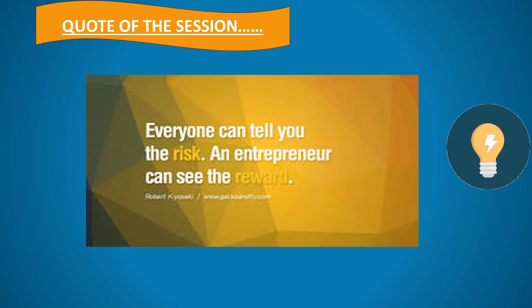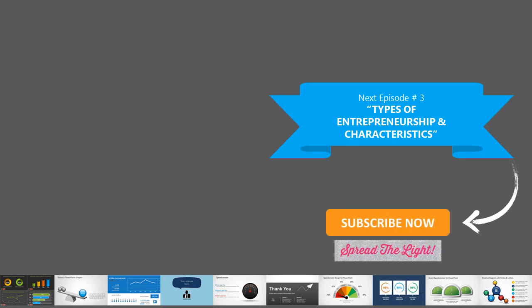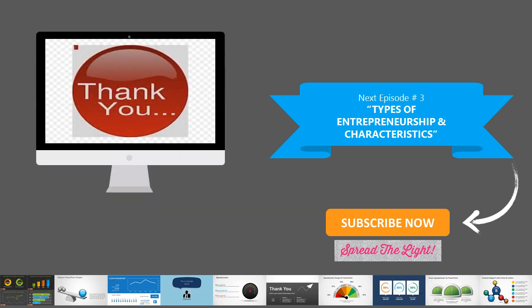We all have firm belief that the Almighty never wastes our single minute level of effort and favor — so when there is a will, there is a way. That is all about today's episode 2, in which we learned about corporate entrepreneurship. I hope you have gained valuable information and knowledge about the topic. In the next episode 3, I shall discuss another very interesting topic: types of entrepreneurship and their characteristics. For more helpful videos, please subscribe to my channel. Thank you for watching, and stay blessed always.